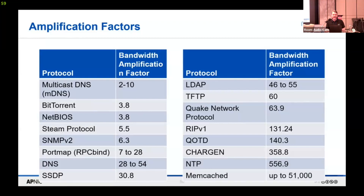Now we add in memcached. Memcached had a vulnerability — it was a commonly poorly installed and configured publicly accessible service. This allowed the attacker to upload a file into memcached and then request it again and again using the UDP protocol. A very small request would result in a whole file being sent out as the reply, spoofing the source IP address and sending it to the victim — up to 51,000 times amplification.